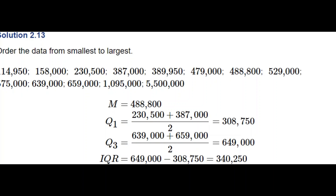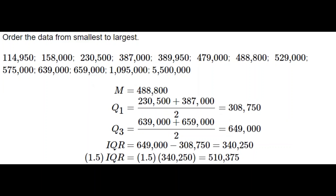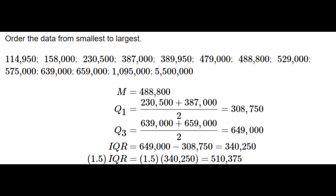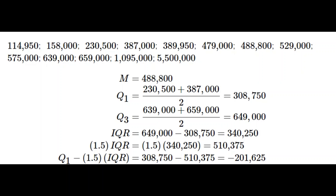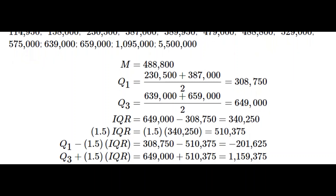To identify any outliers, we calculate 1.5 times the IQR, which is 1.5 × $340,250 = $510,375. Subtracting this from Q1 gives −$201,625, and adding it to Q3 gives $1,159,375. These are the boundaries beyond which any value is a potential outlier.